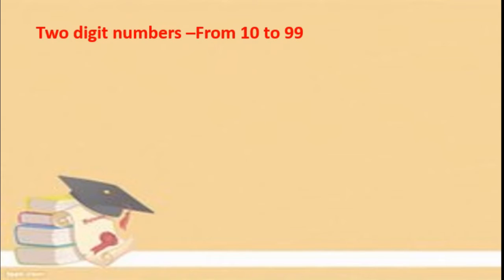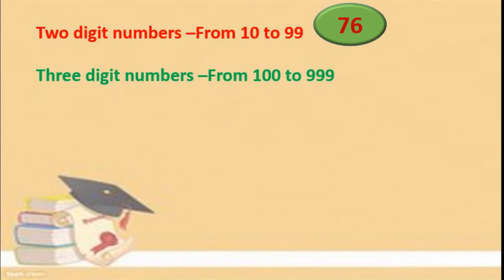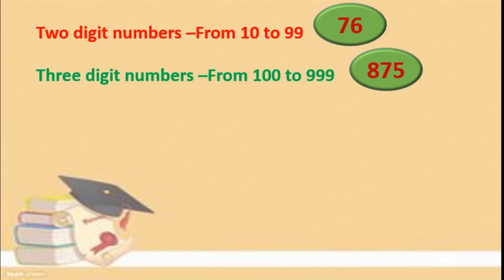Now dear students, two-digit numbers are from 10 to 99. For example, 76. Three-digit numbers are from 100 up to 999. One example: 875. The smallest three-digit number is 100 and the largest three-digit number is 999.